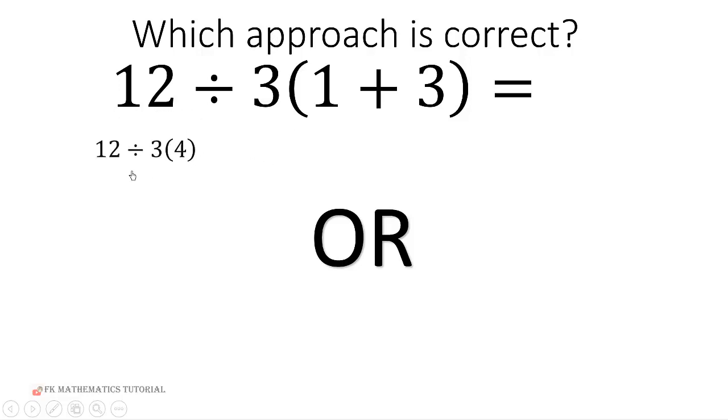The first one uses this. It times this by this, that will give you 4. Then it multiplies this by this to get 12, which gives us 12 divided by 12 to get 1.